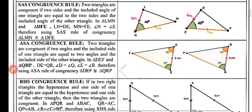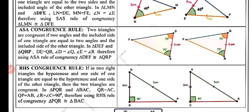Now the third rule is the Angle-Side-Angle congruency rule. Two triangles are congruent if two angles and the included side of one triangle are equal to the two angles and the included side of the other triangle. So these two triangles are congruent and will be written as triangle DEF congruent to triangle QRP.